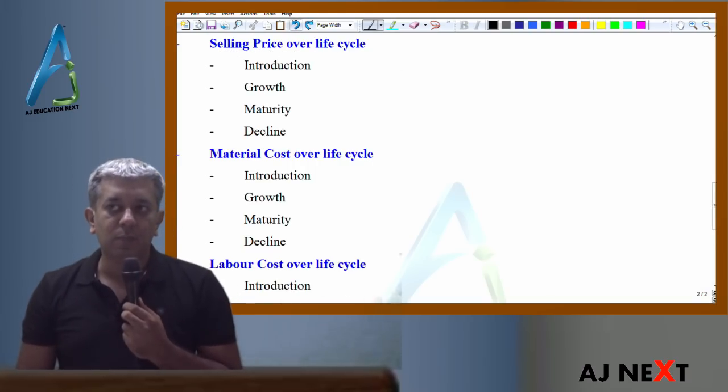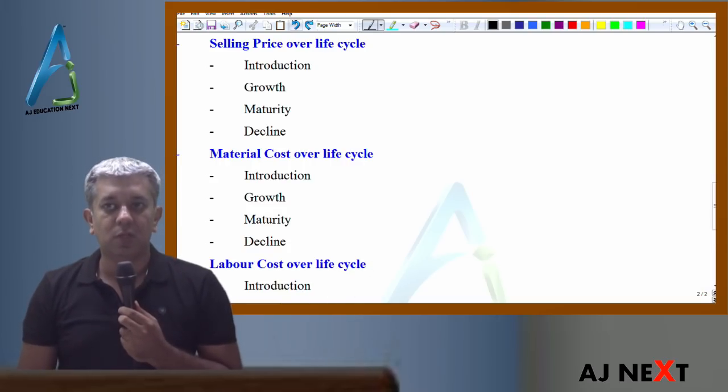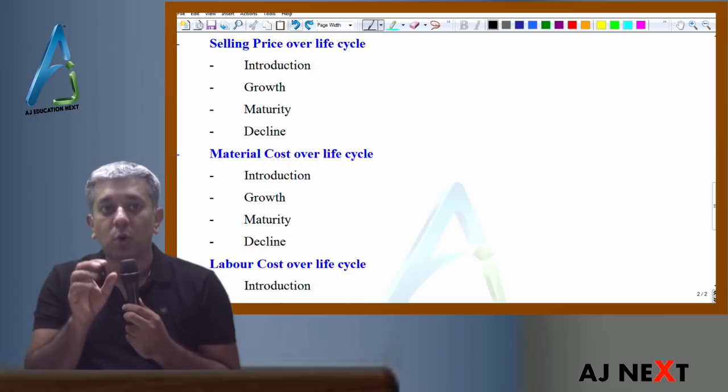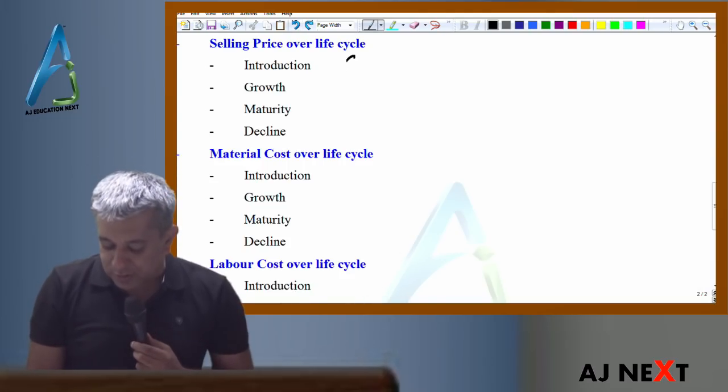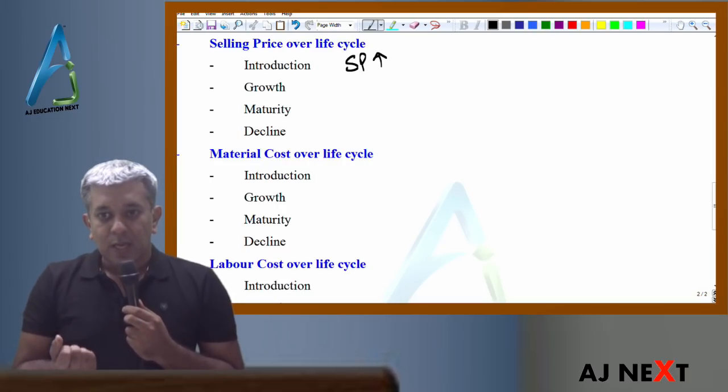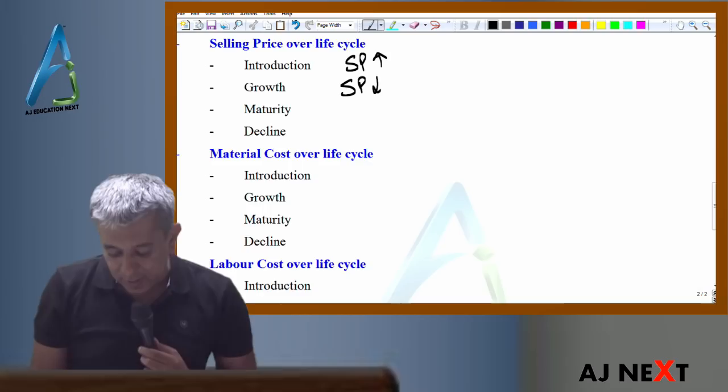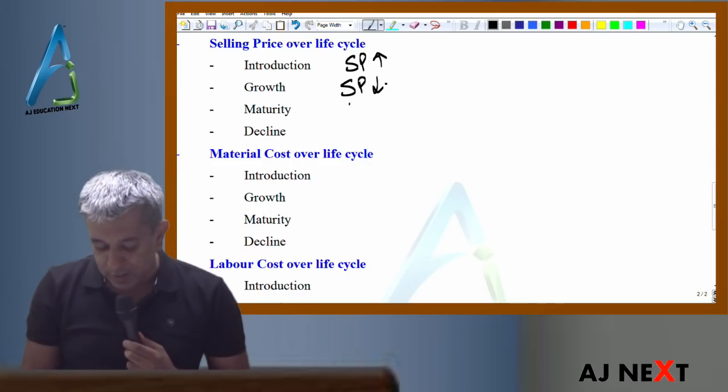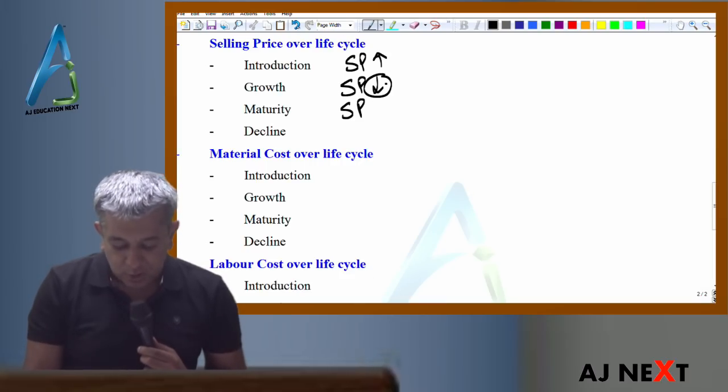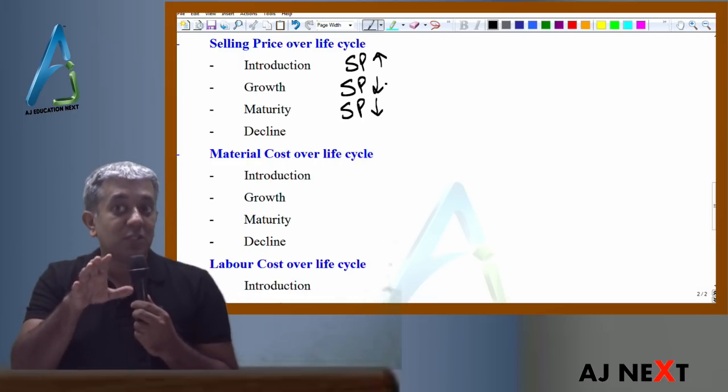Honestly, I cannot generalize this. I can give you one or two examples that are completely contrasting. Because in your exams, questions will ask for your opinions. Suppose there's a technology product, an innovative product, with few competitors initially. In the introduction stage, usually your selling price will be very high because competitors are few and I would like to grab the market. But over a period of time, competitors will also join in. Then I will have to reduce the price slightly. These are your first three stages, might be of a techno product.